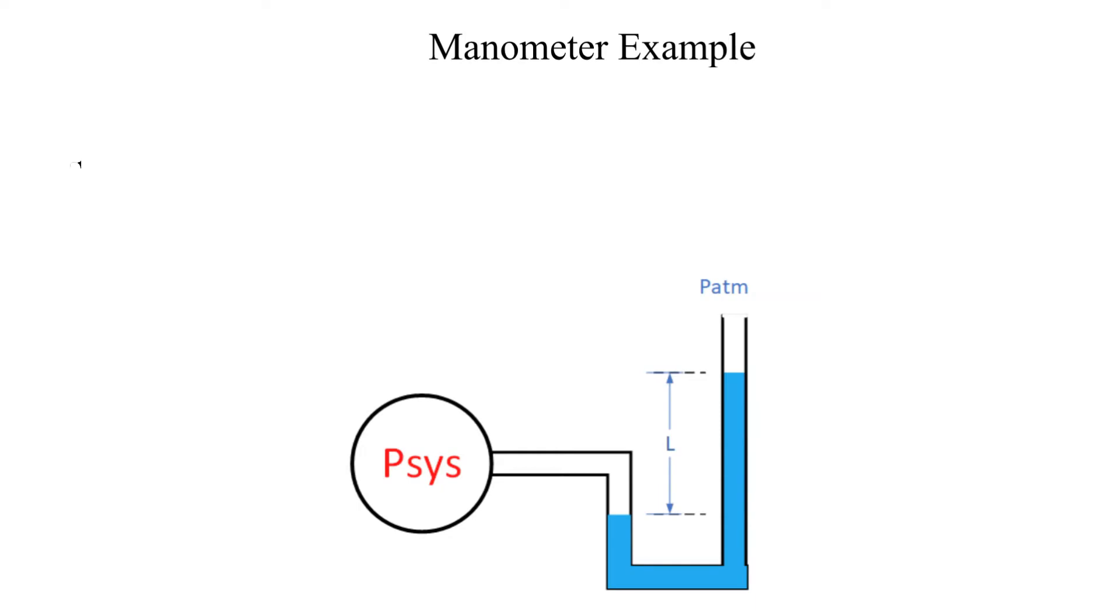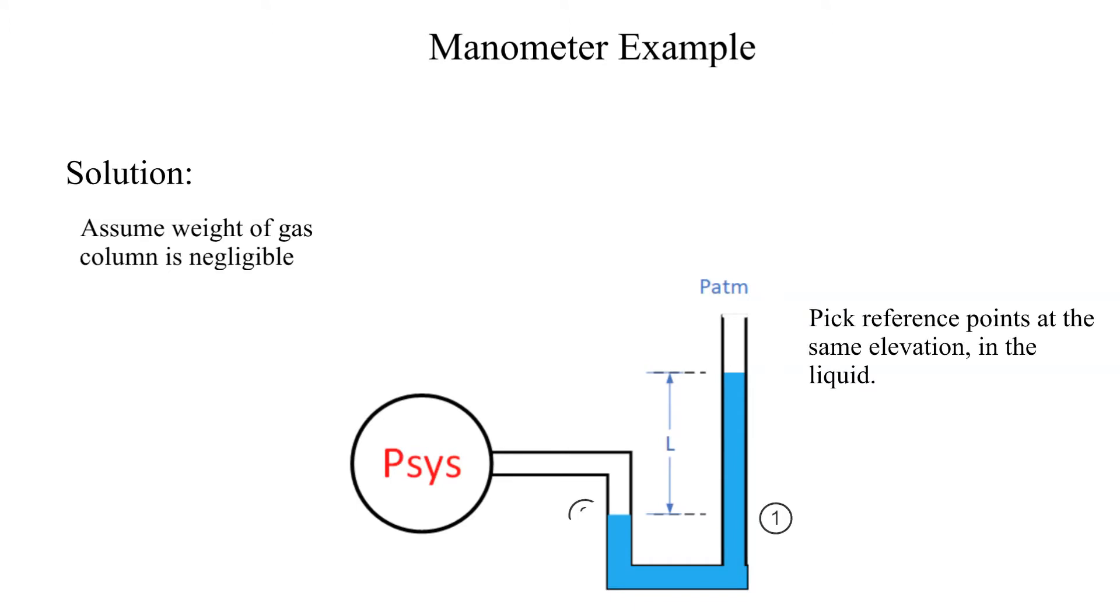Now let's set up to solve the problem. We will assume that the density and the weight of the gas is negligible. The next step is to pick reference points at the same elevation. In this example we select points 1 and 2 as shown.